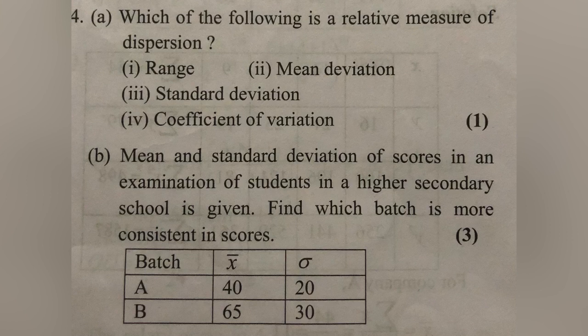The simple term is we can compare A with B using the formula: CV equals sigma divided by x-bar, multiplied by 100.